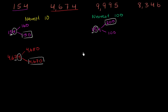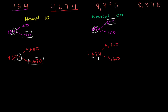Now let's round the same number to the nearest hundred. 4,674 — the multiple of 100 below this is 4,600, and the multiple of 100 above this is 4,700. If we're trying to round to the nearest hundred, we want to look at the tens place. The tens place is five or greater, so we round up to 4,700.